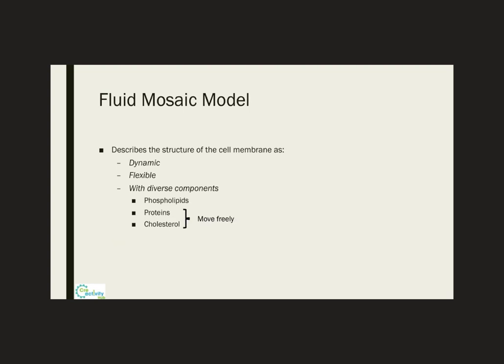Now the fluid mosaic model of a cell membrane will describe the structure of the cell membrane as a dynamic, flexible structure that's made up of different components. And the two main components of the cell membrane are the phospholipids and proteins. Cholesterol will be embedded in the membrane, and it will work as an essential building block which will help regulate the membrane fluidity. And according to this fluid mosaic model, the proteins and the lipids are free to move within the double layer of the phospholipids.